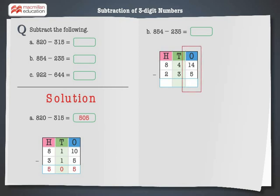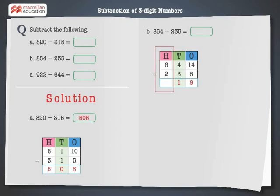Now subtract the 1s: 14 ones minus 5 ones is equal to 9 ones. Now subtract the 10s: 4 minus 3 is equal to 1 ten. And now subtract the 100s: 8 minus 2 is equal to 6 hundreds. Hence, 854 minus 235 is equal to 619.